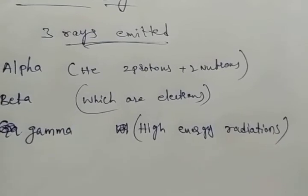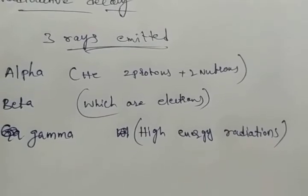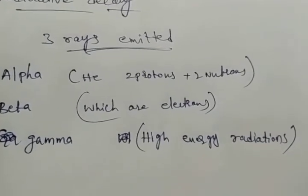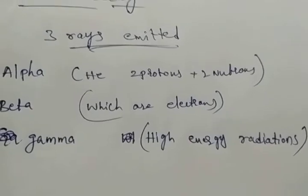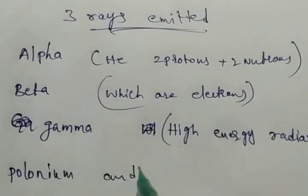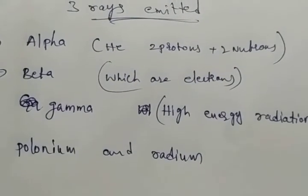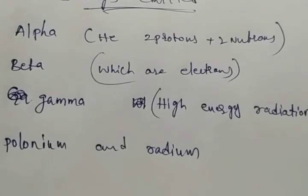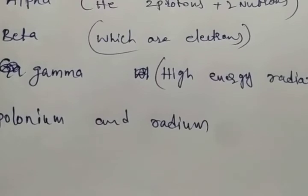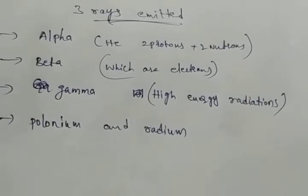Radioactivity was first discovered by Henry Becquerel in 1896. He got the Nobel Prize in 1903 along with Madame Curie. Madame Curie discovered and isolated new radioactive elements — polonium and radium — from pitchblende and chalcolite.